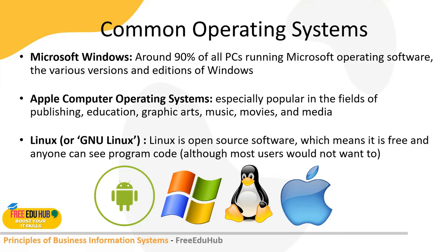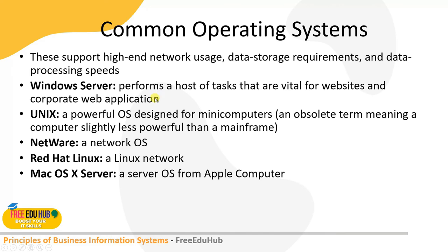These common operating systems are used for personal usage on computers at home and in offices, but in an enterprise environment there are other operating systems used for high productivity. These support high-end network usage, data storage requirements, and data processing speeds. For example, Windows Server performs tasks vital for websites and corporate and web applications — used for hosting web servers, managing user accounts on a network, and storage. Unix is a powerful operating system designed for microcomputers, very secure and used for the enterprise environment.